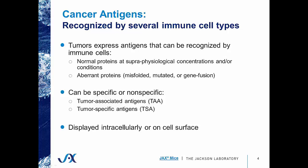Tumor cell antigens can be either from normal proteins that are expressed at supraphysiological concentrations and/or conditions, or they can be aberrant proteins that are either misfolded, mutated, or gene fusion products that have gained a novel function. These antigens can be expressed only by tumors — so-called tumor-specific antigens — or they can be expressed by both normal cells and tumors, called tumor-associated antigens. Although we typically think of antigens being displayed on the cell surface, they can also be expressed intracellularly, as well as on the cell surface.